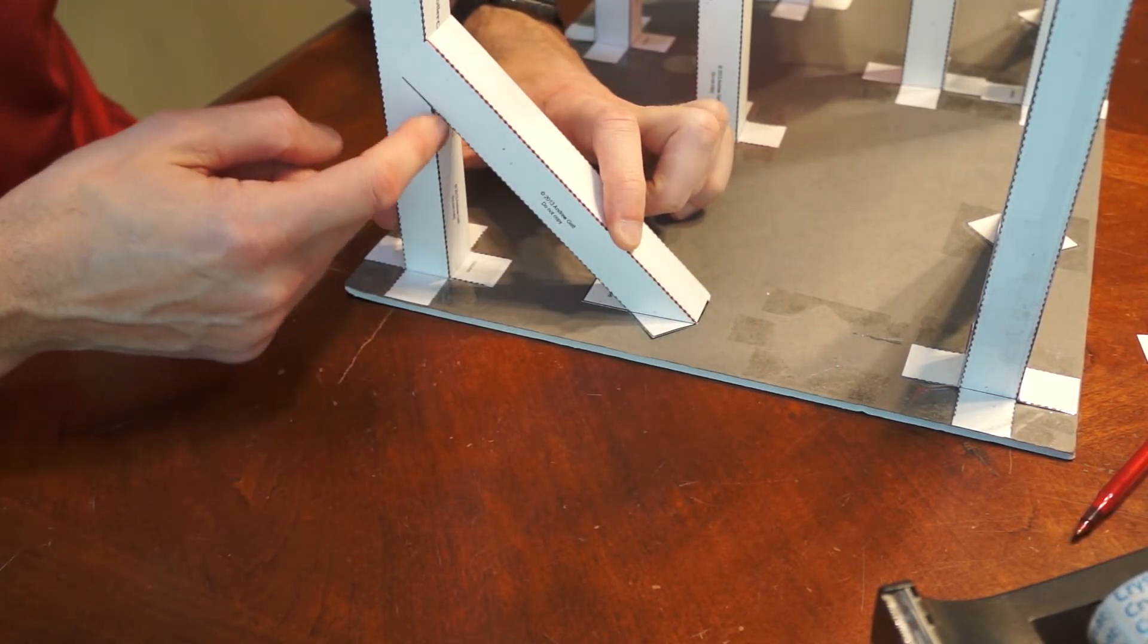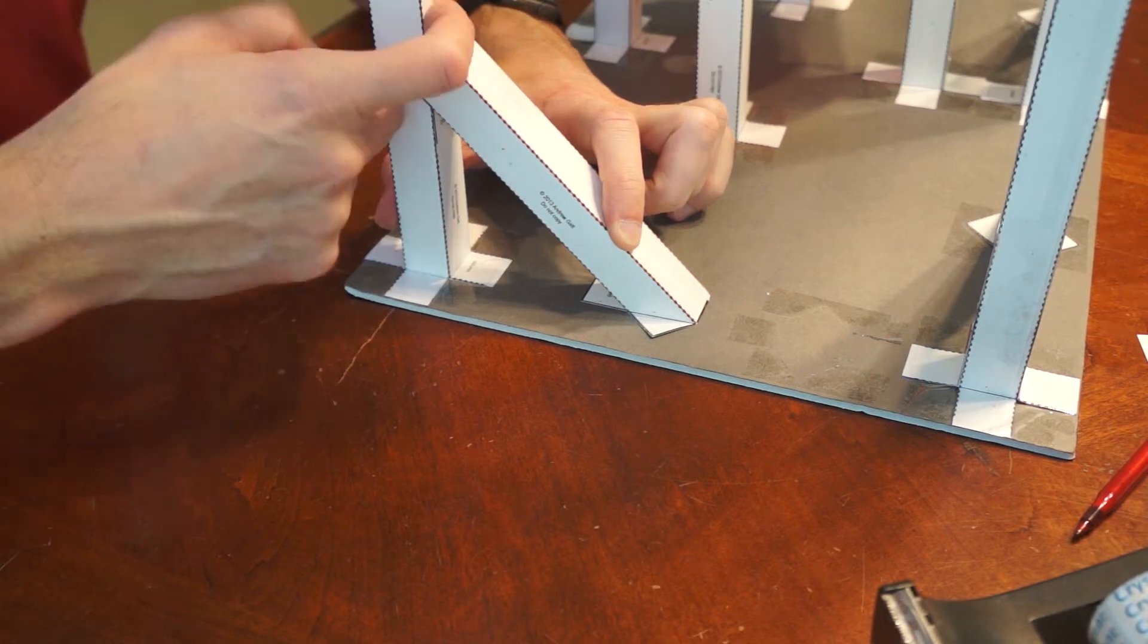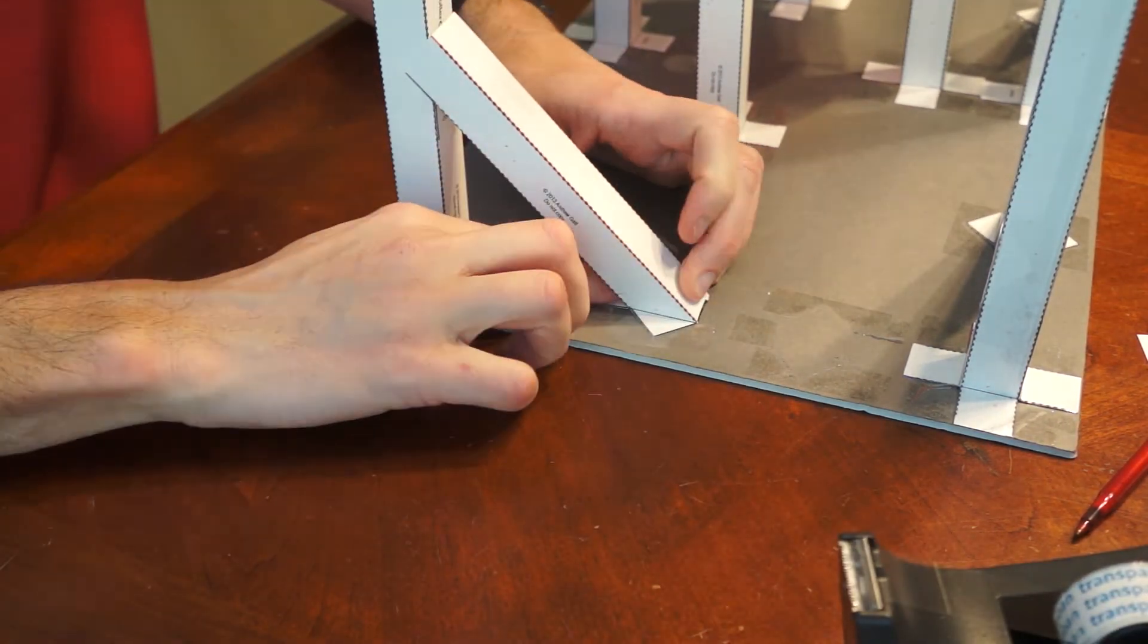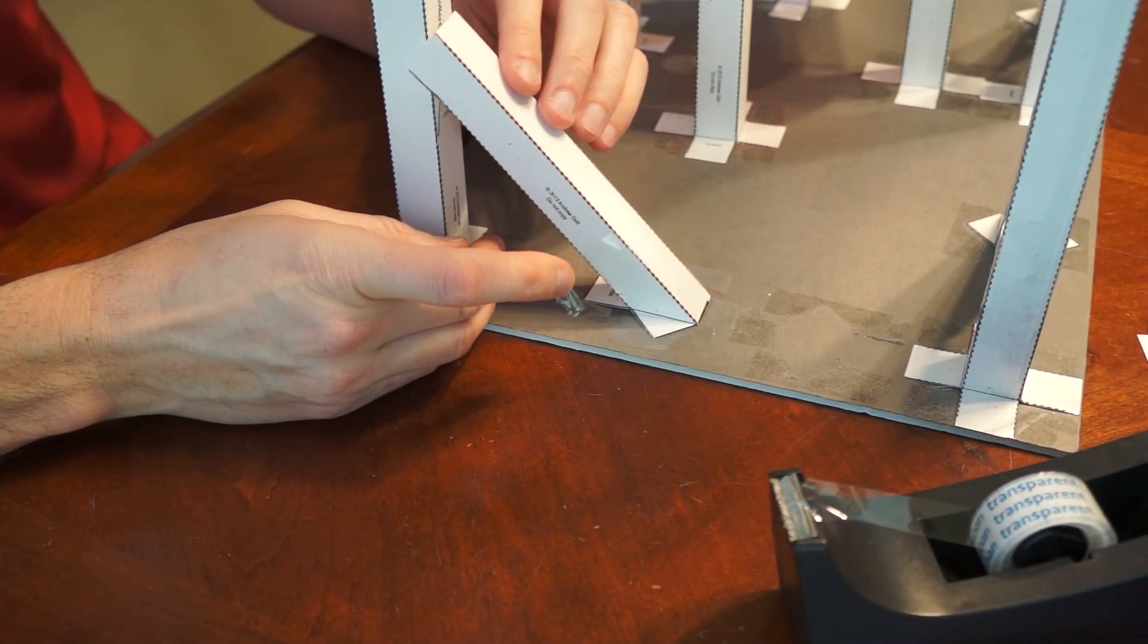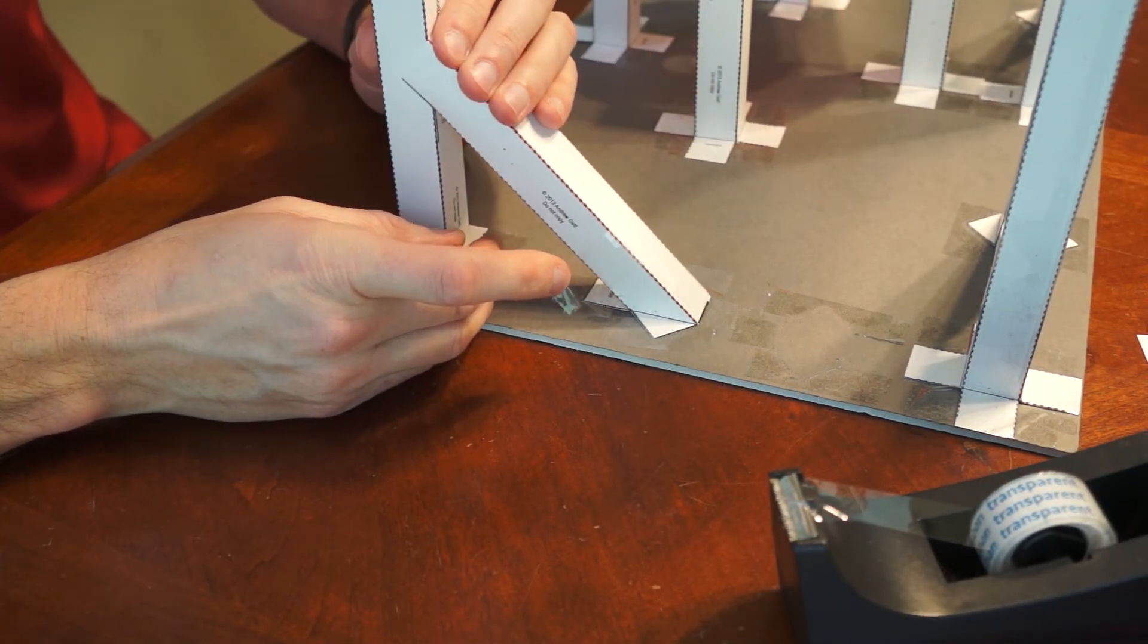There's this flap pointing down this way, two on the sides, and then straight up here. Make sure that this stays right up tight against the column.